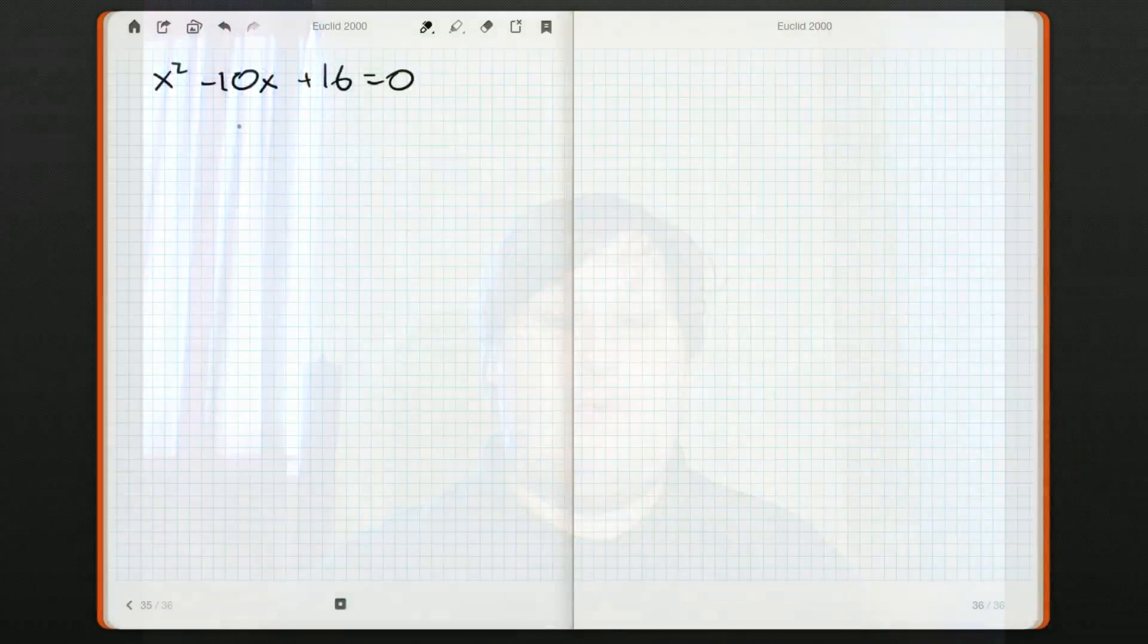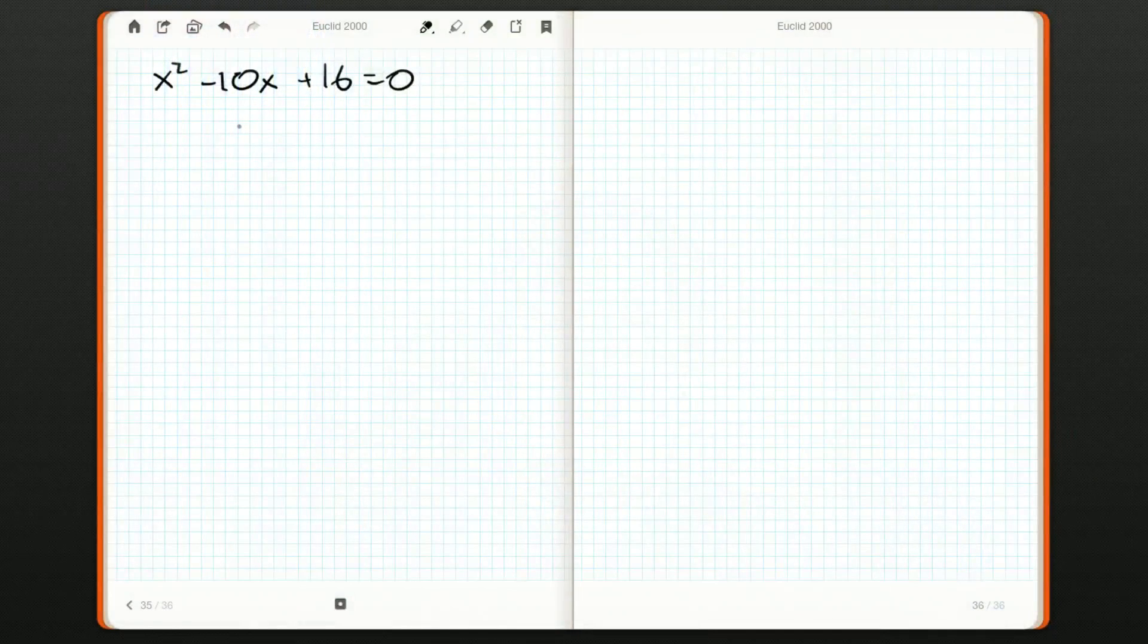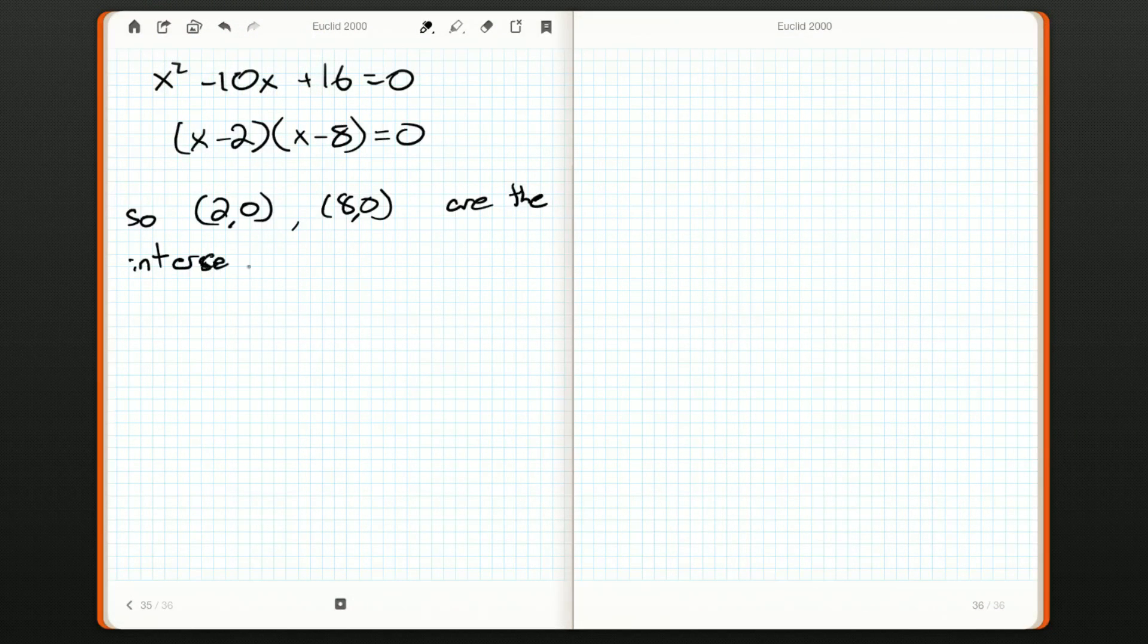In fact, if we had wanted to, we had a third option. We could have done polynomial division, if you're aware of that. Divided this quadratic by (x - 2) and factor it. Or you can use the quadratic formula. Either way will work. So, (2, 0), (8, 0) are the intercepts. B is at (2, 0), therefore, C must be at (8, 0).